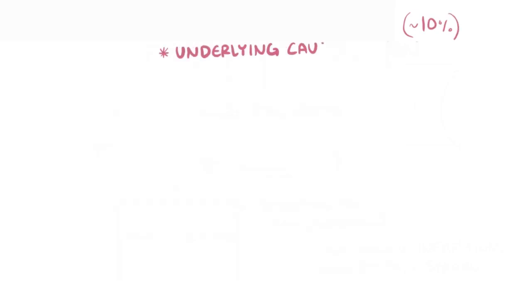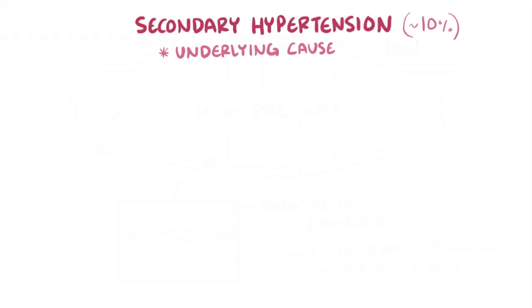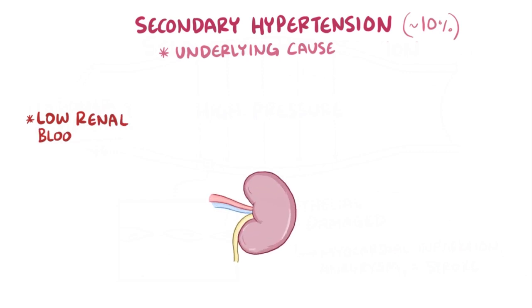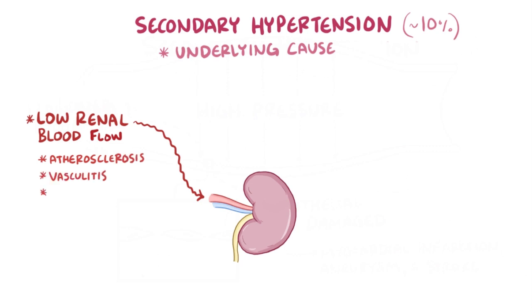About 10% of the time, there is a specific, identifiable underlying condition that's the cause of the hypertension, and we call this secondary hypertension. For example, anything that limits the blood flow to the kidneys or the renal blood flow can cause hypertension, as well as things like atherosclerosis, vasculitis, or aortic dissection.